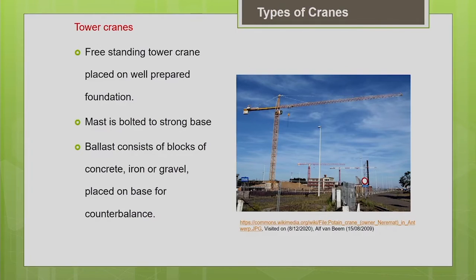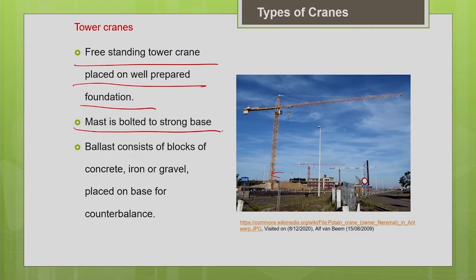All tower cranes should have a proper foundation, designed carefully with heavy reinforcements so that the load can be transferred through the tower to the foundation. The tower sections are bolted with collars and extended bolts to the foundation. Counterweights — blocks of concrete, iron, or gravel — are placed in the counter jib at the top and at the base to balance the overturning moment.